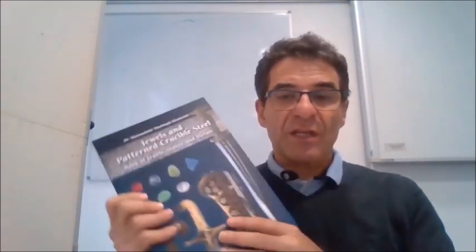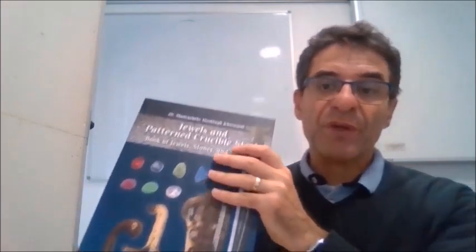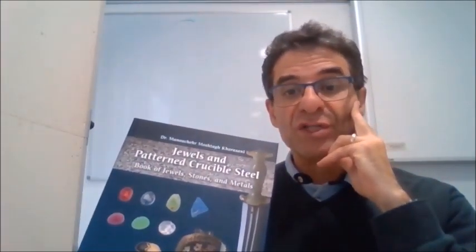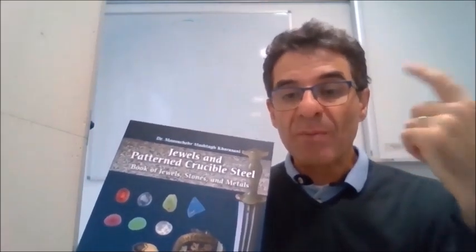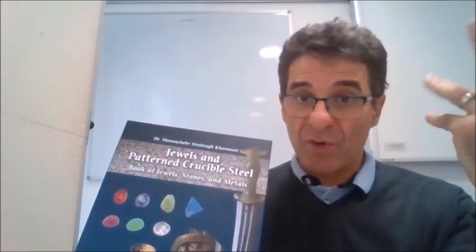I have shown some parts of my new book and I really hope you have enjoyed it. This book is very important because, as you can see, patterned crucible steel is also considered clearly in this book next to precious stones, semi-precious stones and also metals and animal products like pearls.